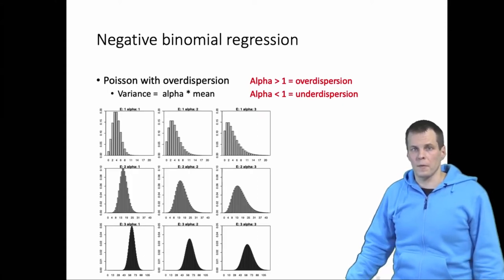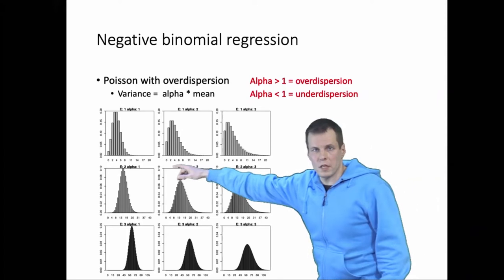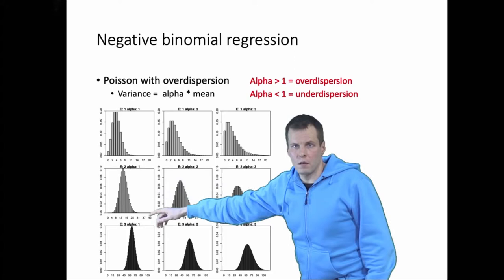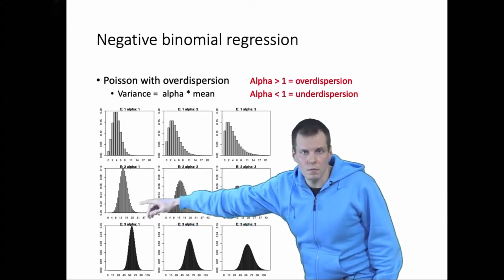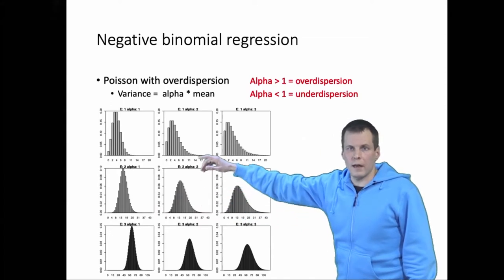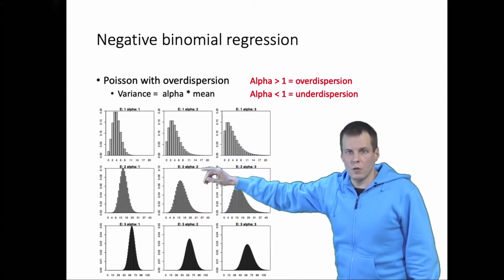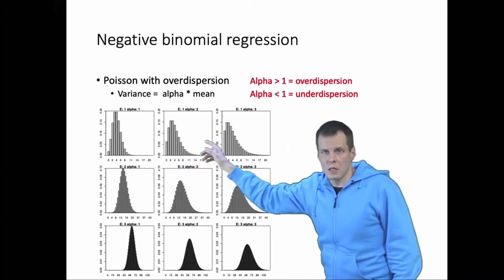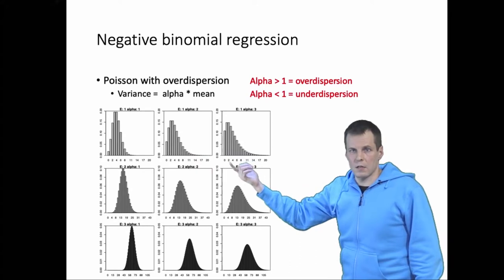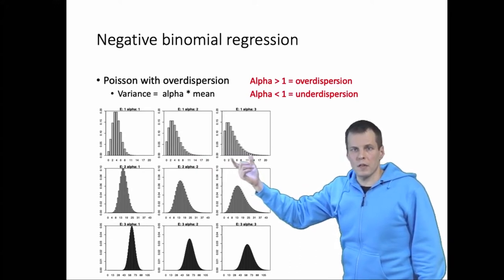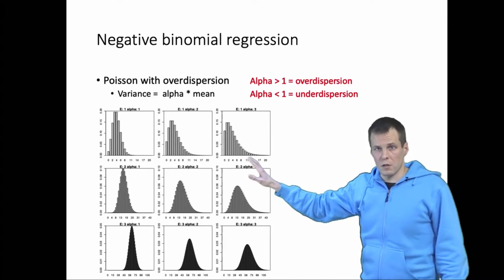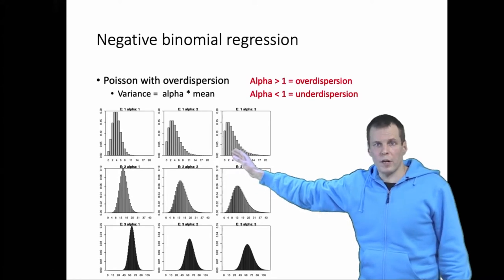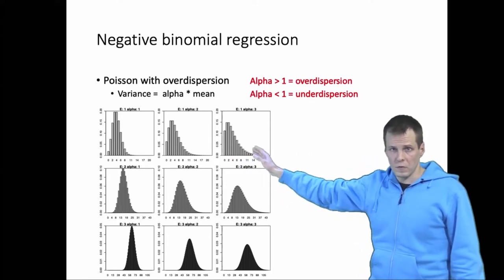Here is a visual example. With the Poisson distribution at different expected values, when alpha equals two or three the expectation stays the same but the variance increases substantially. When we say over-dispersion is three, it means the variance is three times the mean — so if the mean is around three, the actual variance is much greater.